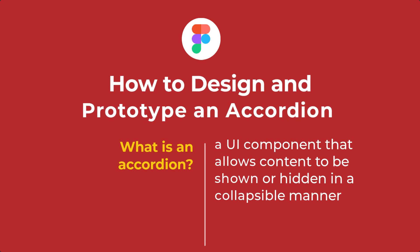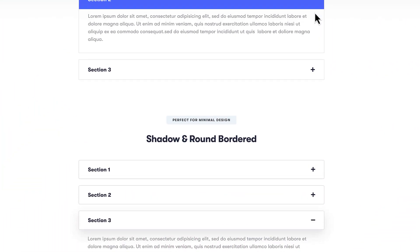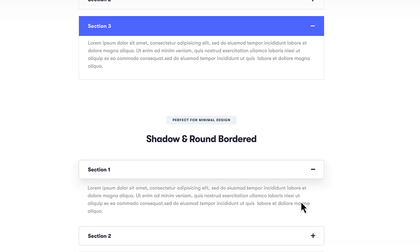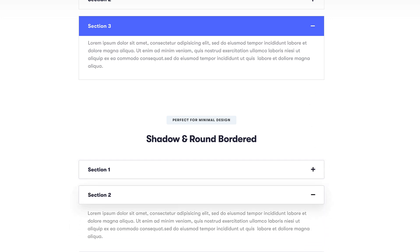An accordion is a UI element that allows content to be displayed in a collapsible format based on an action. So if you click on it or tap on it, it can expand or collapse to present all the information that falls under that particular accordion item.